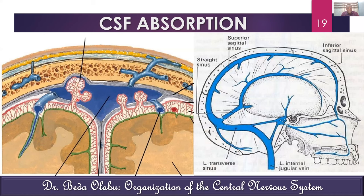When these granulations return CSF to the bloodstream, it enters venous blood in the dural venous sinuses — veins that run between layers of the dura mater. Most granulations are found within the superior sagittal sinus, making it the primary site where CSF enters from the subarachnoid spaces.